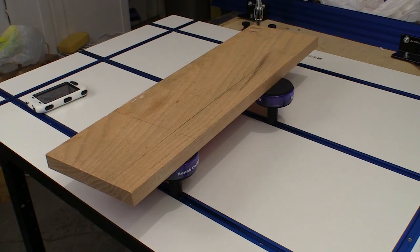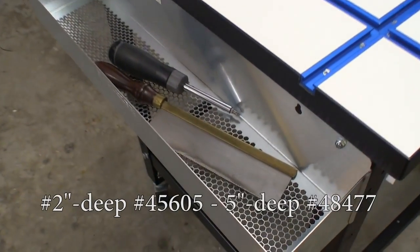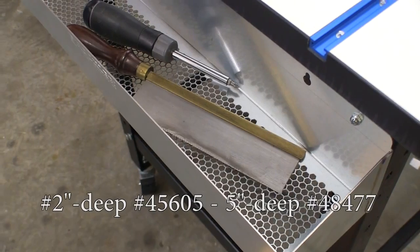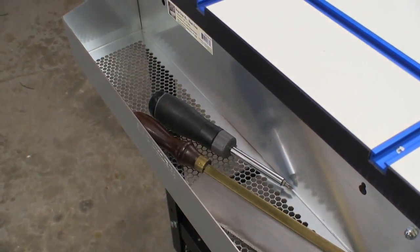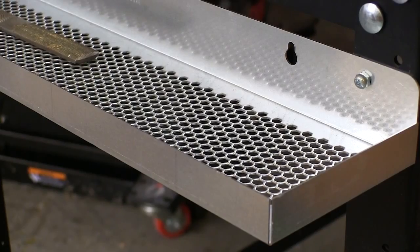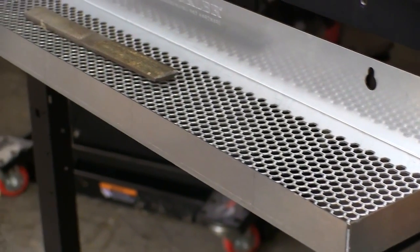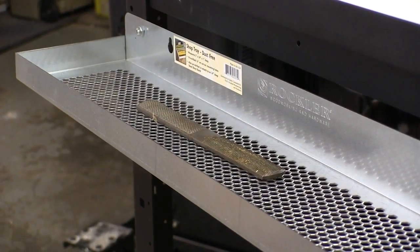Because any working surface gets cluttered with tools too quickly, Rockler offers these dust-free trays. These all-aluminum trays mount in pre-existing holes in a Rockler shop stand and they have a full mesh bottom that lets the dust out and keeps your tools in. Both the deeper and this shallower version of the trays give you lots of room for storing tools and supplies you need for the job.